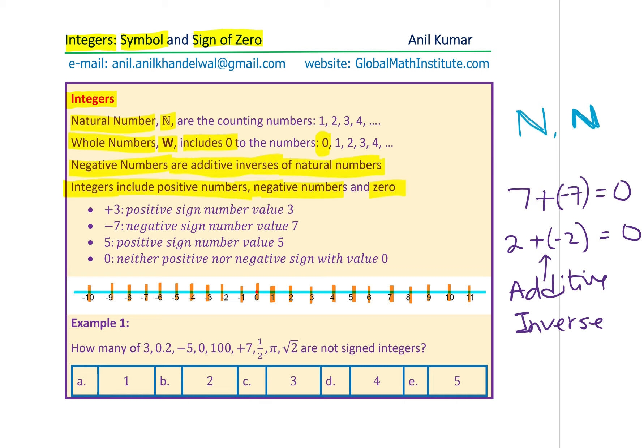Distinctly, 0 is neither positive nor negative — very important. In the definition itself, we say on either side: the right-hand side has positive numbers, the left-hand side has negative numbers, and in between is 0, which does not have any sign.